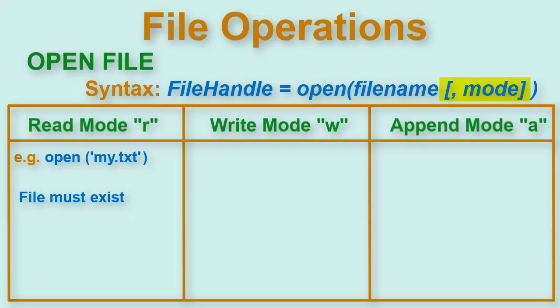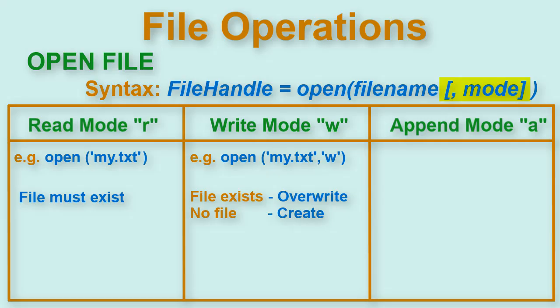Next type of mode is W mode which is for writing. If you specify W then if the file exists it will overwrite it. If the file does not exist it will create it.